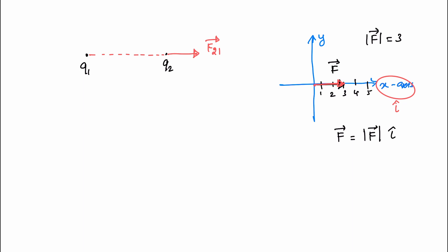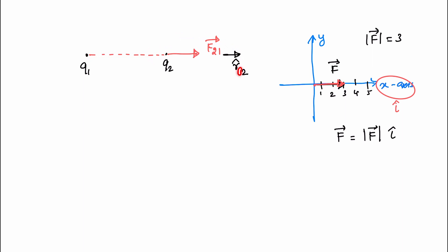Now, in this case, we express a random direction vector. That is the direction vector — it is the F21 vector. So the direction vector for F21 is expressed as a unit vector. This direction vector goes from charge 1 to charge 2, so it is called R-cap 1,2.